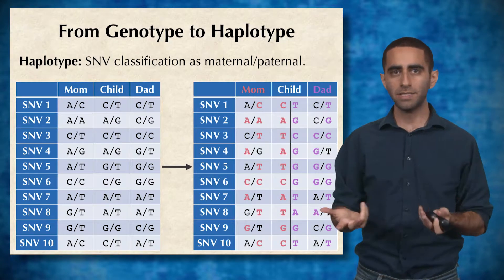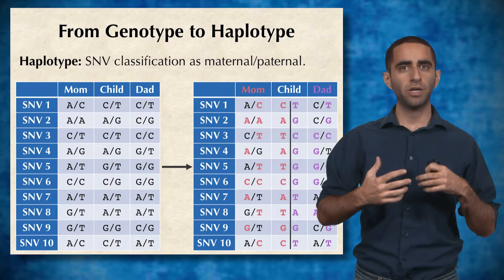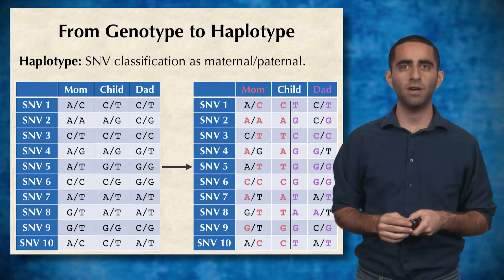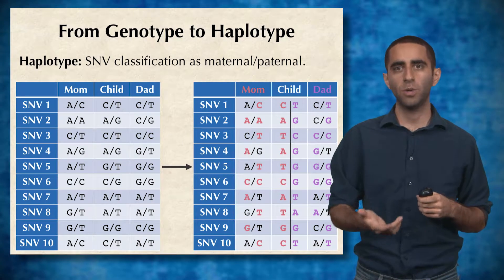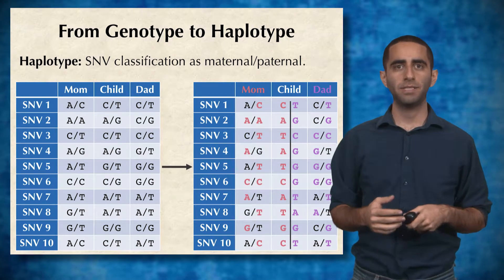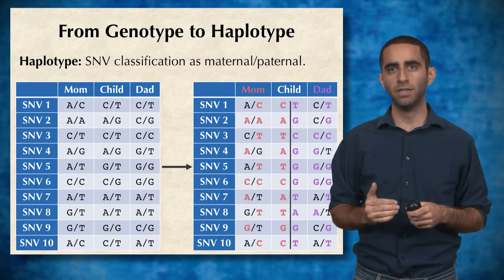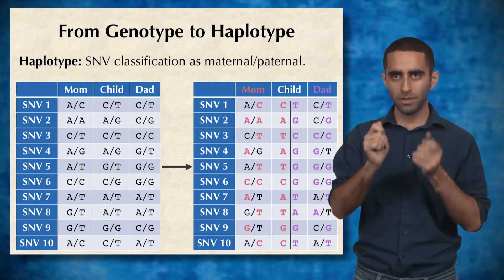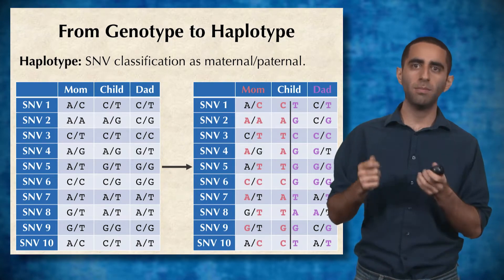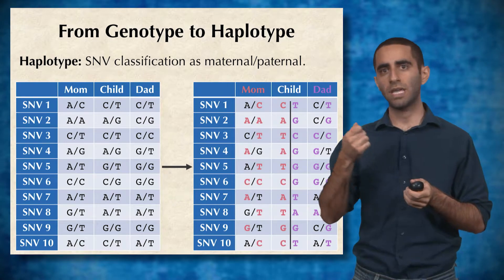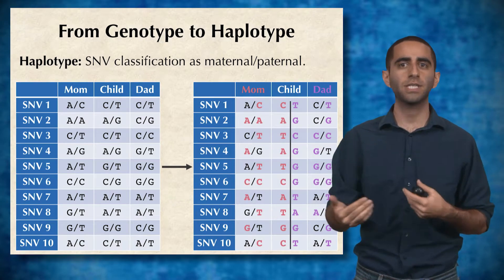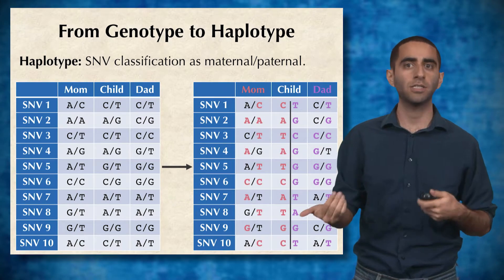Phasing is the problem in which we try to determine the haplotype of a given individual. For the child, we try to haplotype — basically, for every SNV, given the two letters at that SNV, we try to find which letter came from mom and which letter came from dad. Once we determine this, we can further investigate the potential causes of diseases.